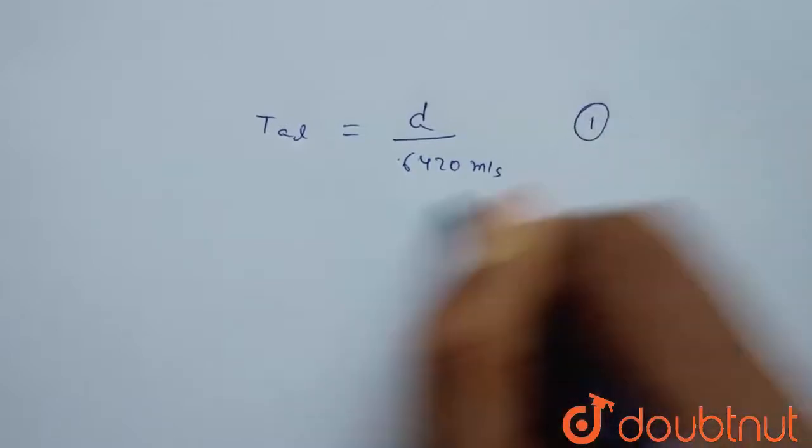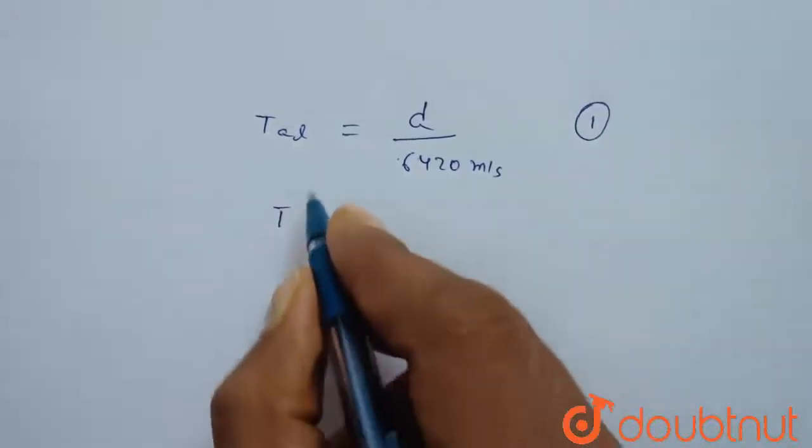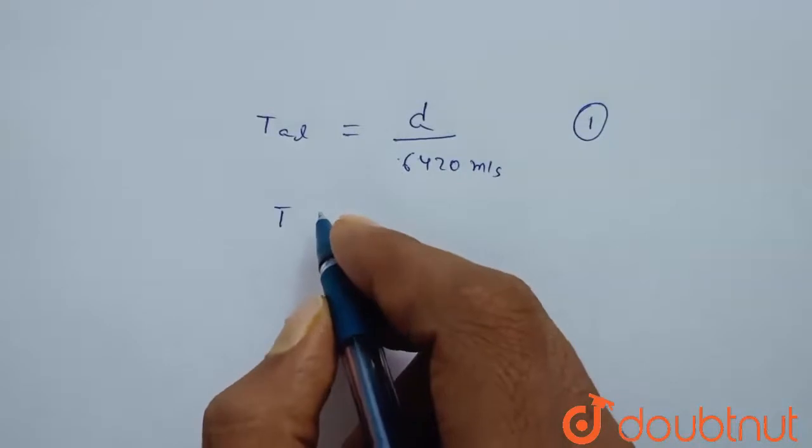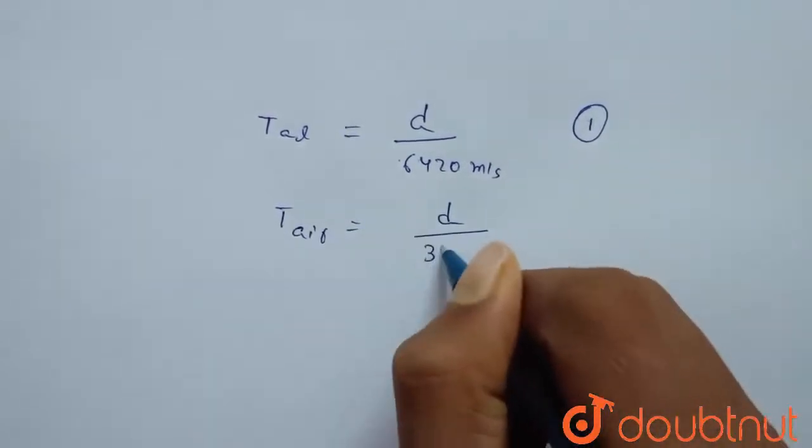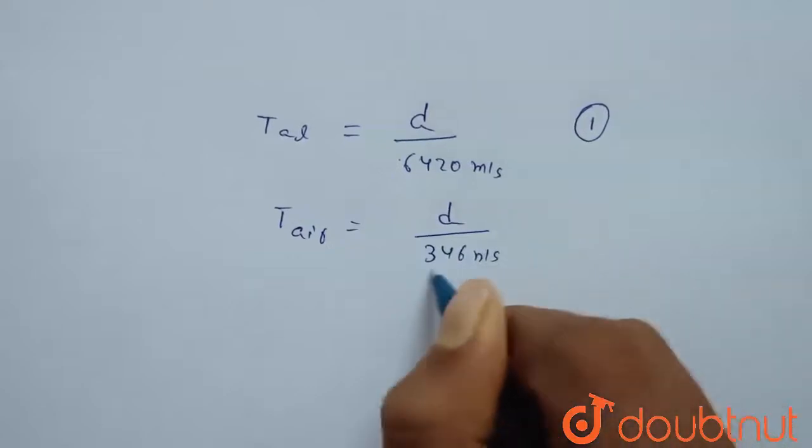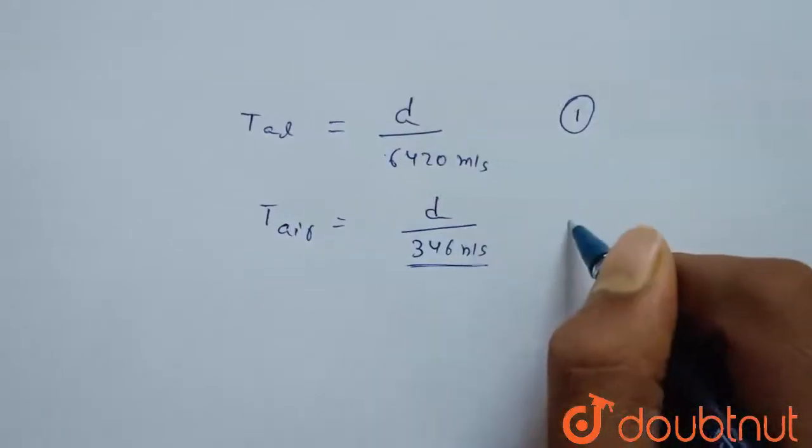So let's see equation 1 and time taken by air that is time taken by sound to reach through air is distance upon 346 meter per second. 346 is speed of sound in air. This is equation 2.